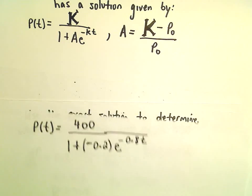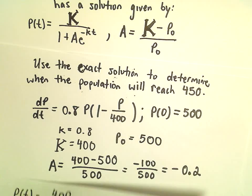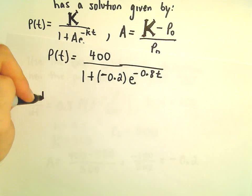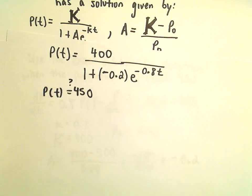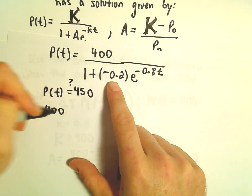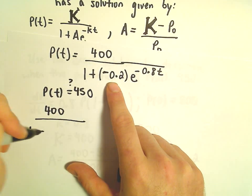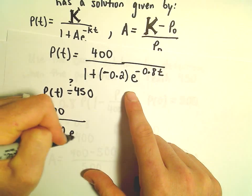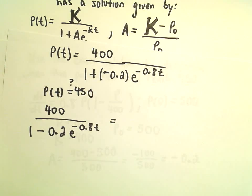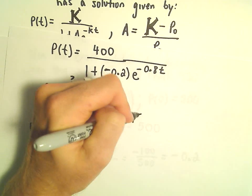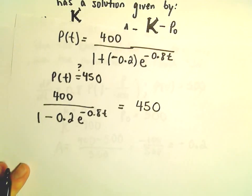Okay, we want to know when this population equals 450. So we want to know when P(t) equals 450. We'll just take our equation 400 over 1 minus 0.2 times e to the negative 0.8 times t and simply set that equal to 450. And now we have to solve.